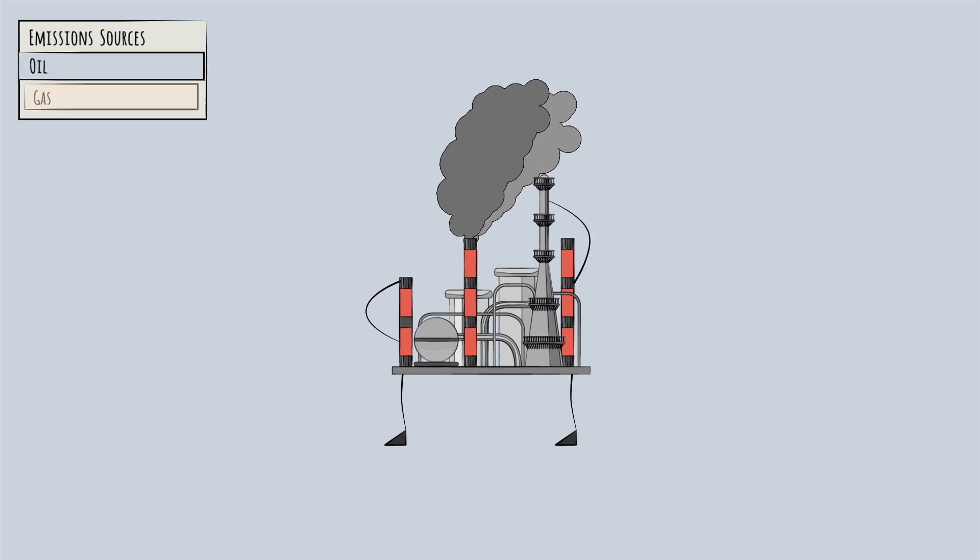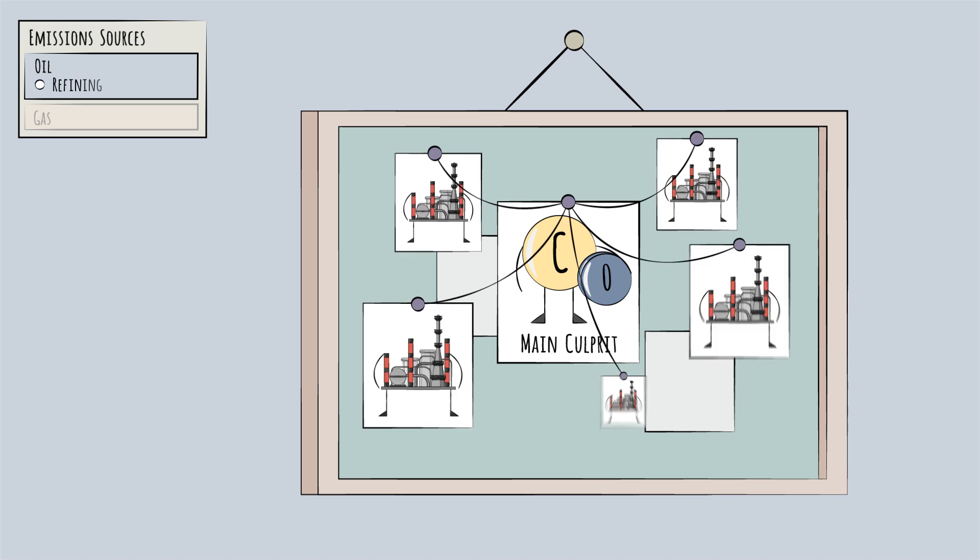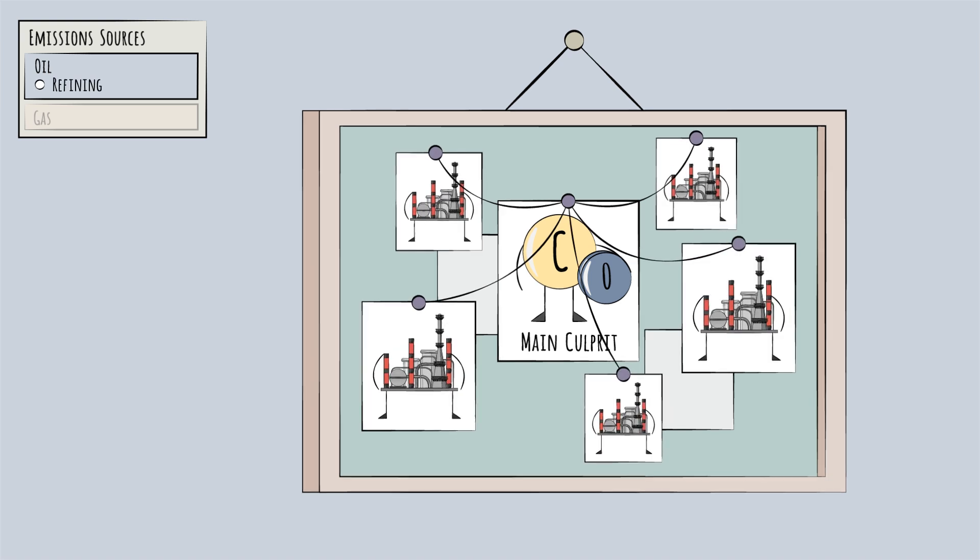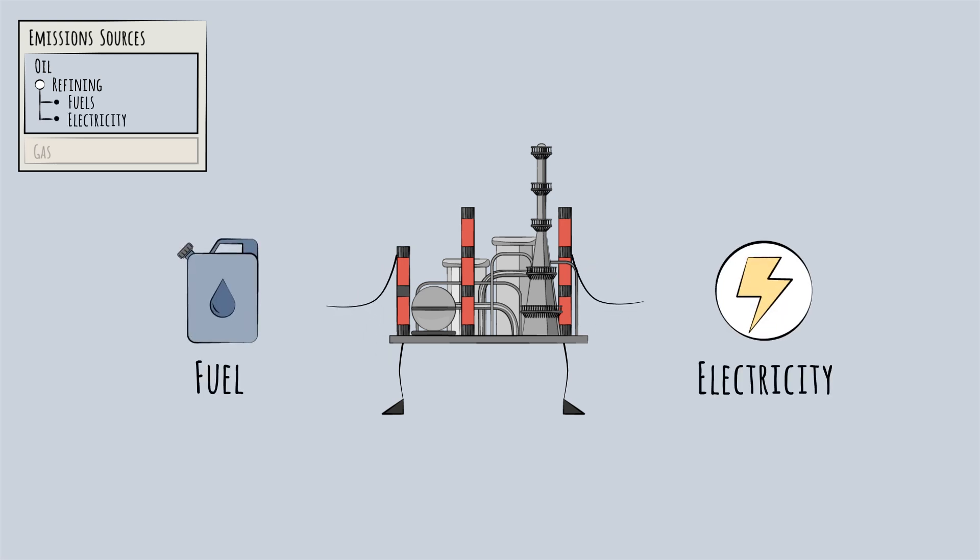Let's start with industry emissions from the oil side of oil and gas. Here, CO2 is the main culprit, and oil refining is a leading source of its emissions. Refineries require massive amounts of energy in two forms: burning fuel to heat the furnaces and using electricity to power the facility. The electricity is easier to impact—refiners can shift to lower emissions sources like renewables or natural gas rather than fuel oils.